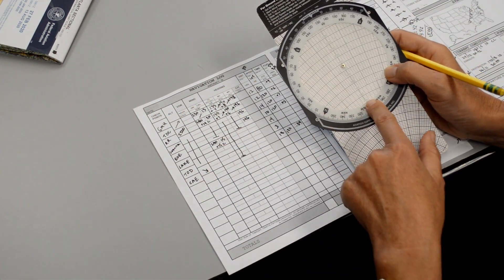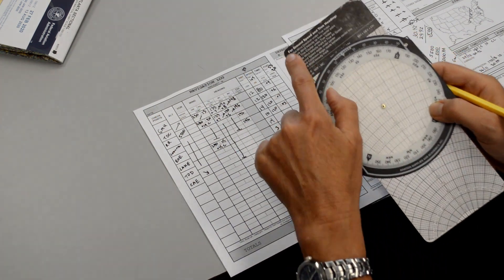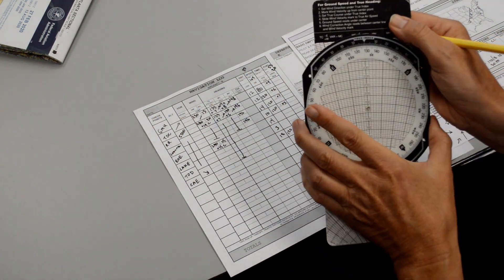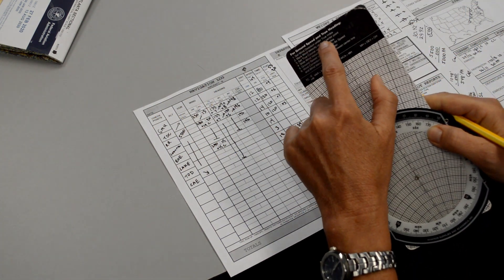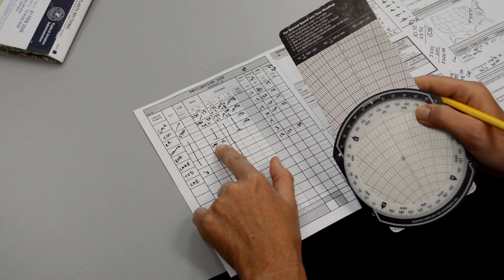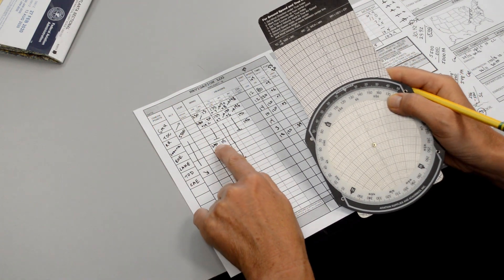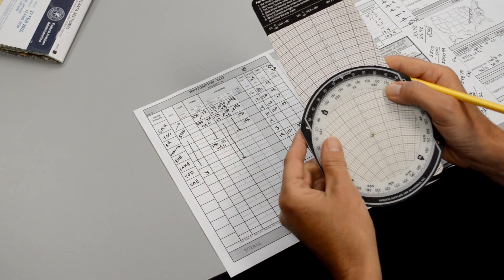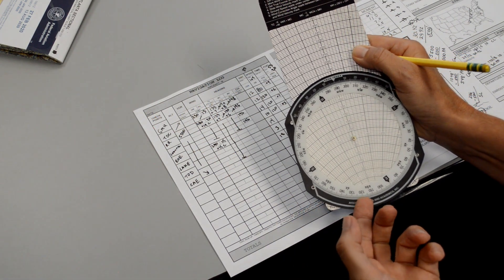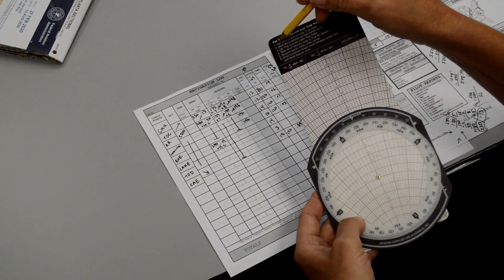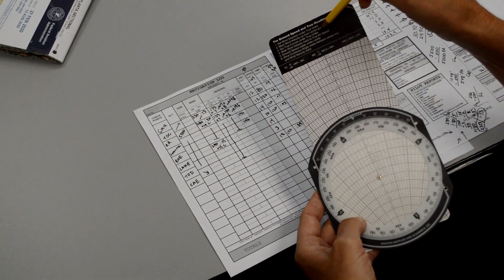So we go to the wind side of our calculator, and we just follow the directions again. We start with the center grommet on 100 to make it easier. Set wind direction under true index. The wind direction for the second half of our journey was 290 degrees. So we place 290 under the true index.